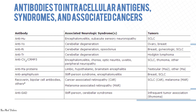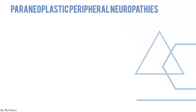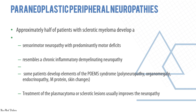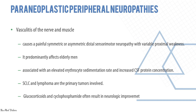Approximately half of patients with sclerotic myeloma develop a sensory-motor neuropathy with predominantly motor deficits, resembling chronic inflammatory demyelinating neuropathy. Some patients develop elements of POEMS syndrome — polyneuropathy, organomegaly, endocrinopathy, M protein, and skin changes. Treatment of the plasmacytoma or sclerotic lesions usually improves the neuropathy.